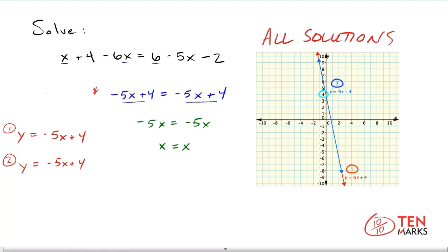You can also think about this numerically. When you simplify it all the way down to x equals x, you know that you can pick any value of x and the left side will equal the right side. For example, if I pick x equals 1, the left side would equal 1. If I picked 572, the left side and the right side would equal 572. So you have all solutions.